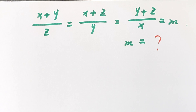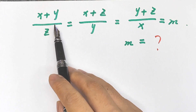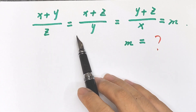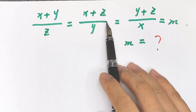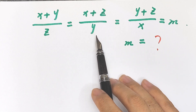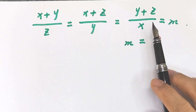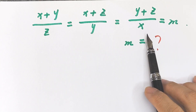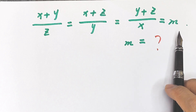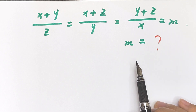Hello everyone, welcome to Math4U. How to solve: (x plus y) divided by z equals (x plus z) divided by y equals (y plus z) divided by x equals m. To find the value of m.